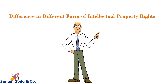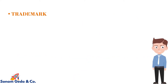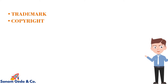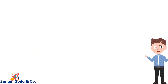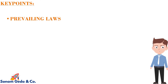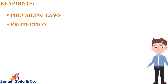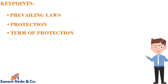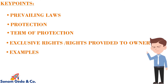In this video we are going to see differences in different forms of intellectual property rights, i.e., trademark, copyright, design, provisional patent, and permanent patent, based on the following key points: prevailing laws, protection, term of protection, exclusive rights or rights provided to owner, and example and symbol associated.